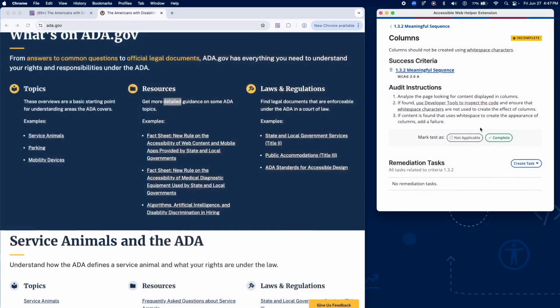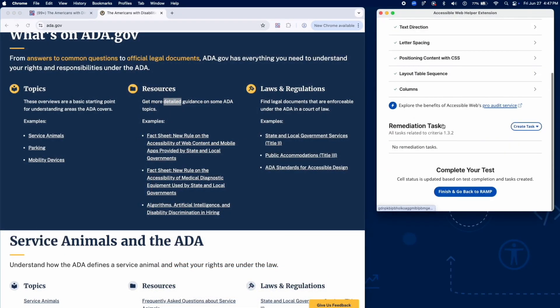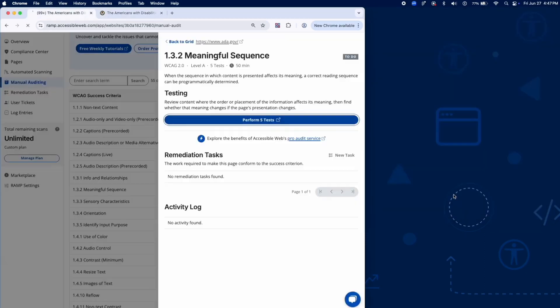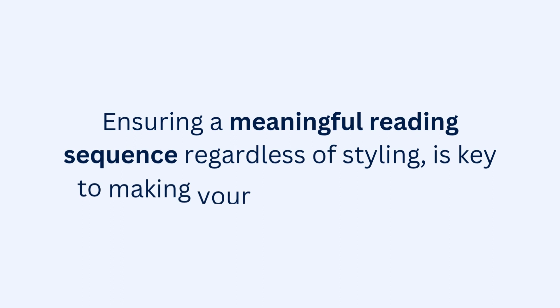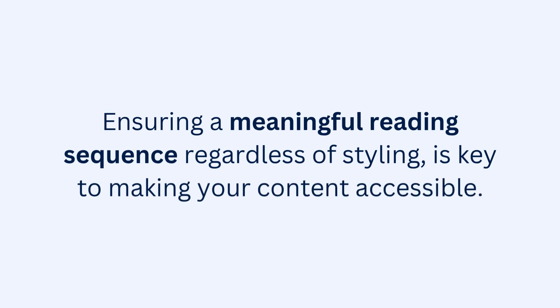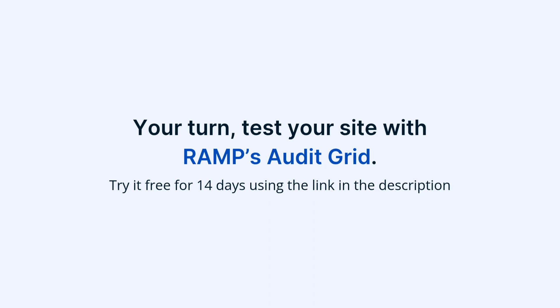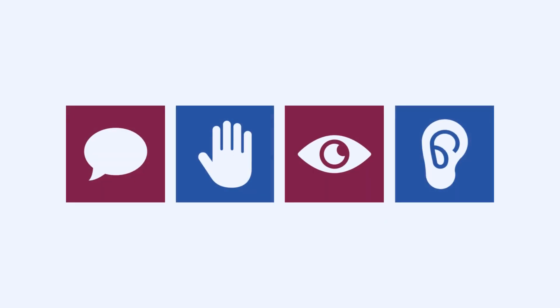And that wraps up the audit for Success Criterion 1.3.2 using RAMP's Audit Grid and Chrome Extension. Ensuring a meaningful reading sequence, regardless of styling, is key to making your content accessible. Now it's your turn — test your site with RAMP's Audit Grid. Try it free for 14 days using the link in the description.